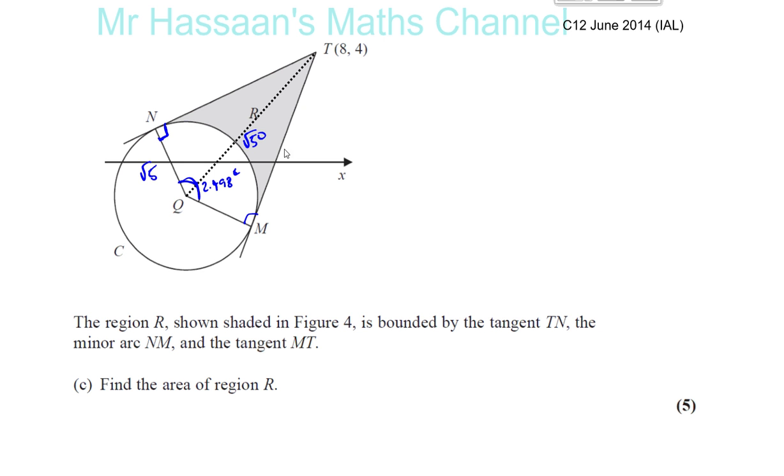So basically, what we see here is we have two identical triangles, which are QTN and QTM, and we have this sector of the circle, which is the sector QNM, called the minor sector. If I find the area of these two triangles together and subtract from it the area of the sector, I'll be left with the area that I need.